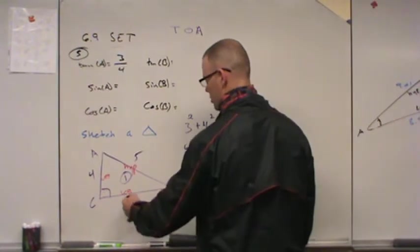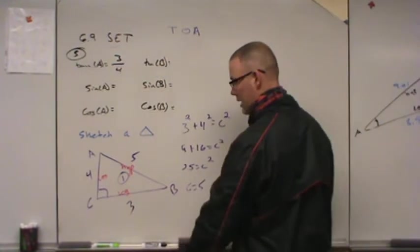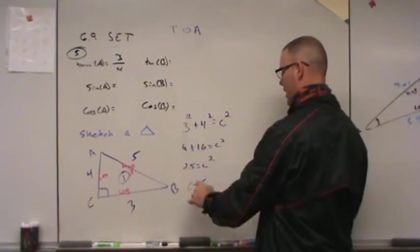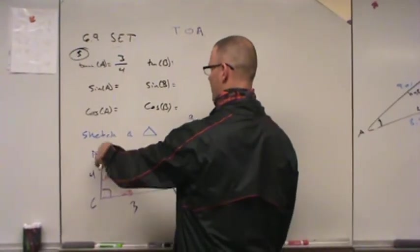Or you should just know that 3, 4, 5 is a Pythagorean triple. Either way you find that. And hint, on questions 8, 9, and 10, you're going to have to use Pythag. Now that I know all three sides, now I can create my ratios.